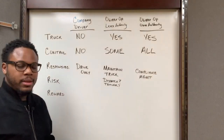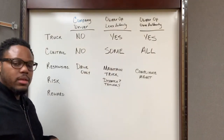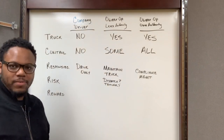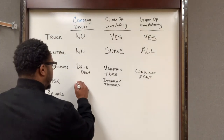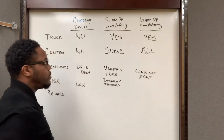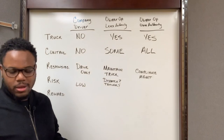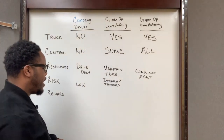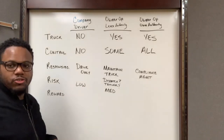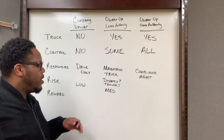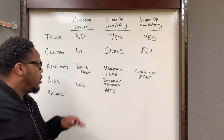The next category is risk. As a company driver, there's really not a whole lot of risk because it's not your equipment and you're not responsible for finding loads — you just need to drive and get the loads delivered. So the risk as a company driver is low. As an owner-operator leasing onto another carrier's authority, I'll call that medium risk, because you do have more risk than a company driver since you're responsible for your truck. However, depending on your agreement, you may or may not be responsible for getting your own loads and trailers.